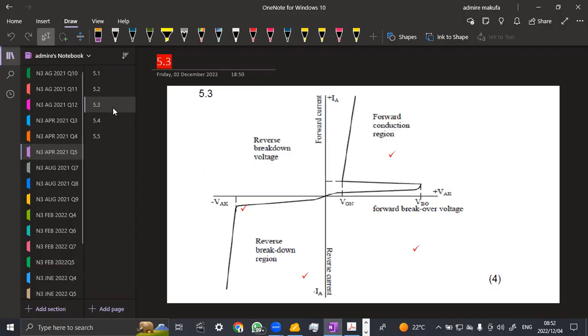So what does it look like? That's what we have there. That's the characteristic curve, which is going back to that Zener diode part, but having some little differences. We've got the reverse breakdown voltage, the forward conduction region, the forward breakdown break over voltage, and the reverse breakdown region. So we have the reverse current and the forward current.